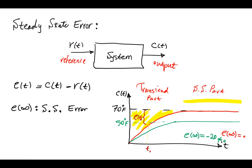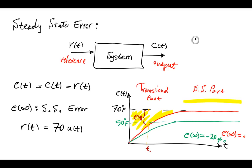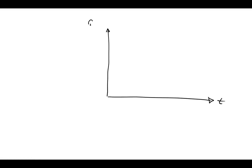But what are the inputs here? The input for both of these two outputs was the constant command of 70 degrees Fahrenheit. So the input was R(t) = 70 × U(t), a unit step multiplied by 70.